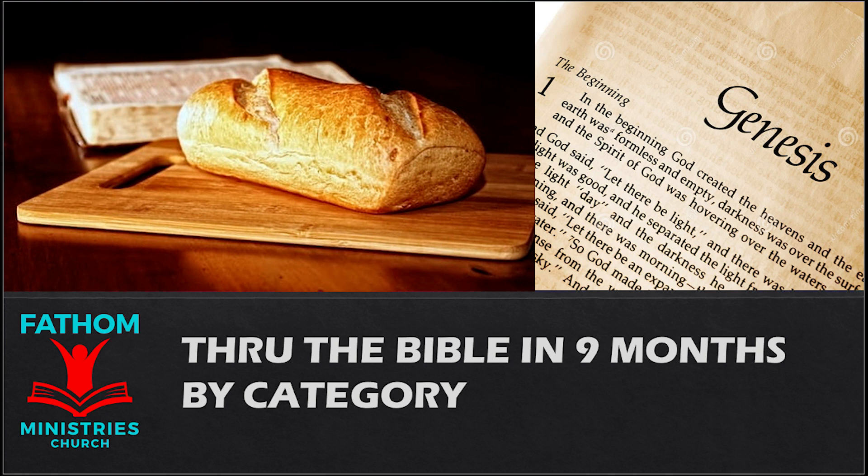Exodus 27. You shall make the altar of acacia wood, five cubits long and five cubits broad. The altar shall be square, and its height shall be three cubits. You shall make horns for it on its four corners. Its horns shall be of one piece with it, and you shall overlay it with bronze. You shall make pots for it to receive its ashes and shovels and basins and forks and firepans. You shall make all its utensils of bronze.